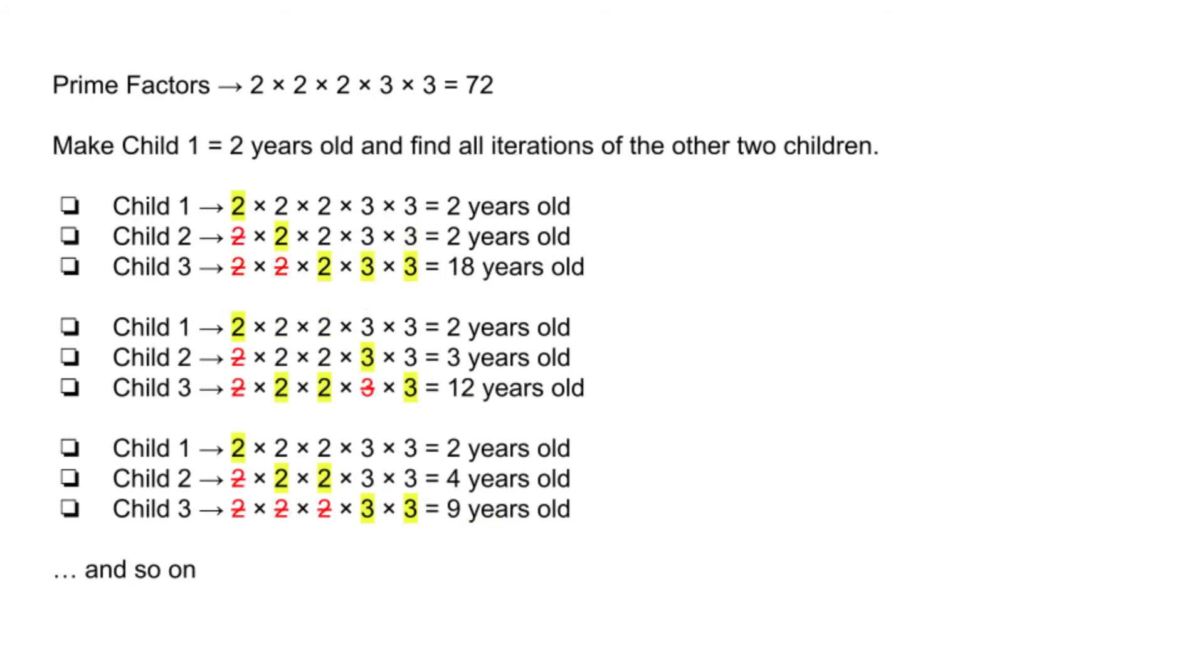Now we will make child 1 fixed to a 2-year-old, which is one of the numbers from our sequence, and figure out all the possible combinations of child 2 and child 3.